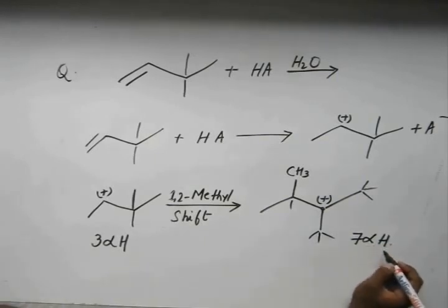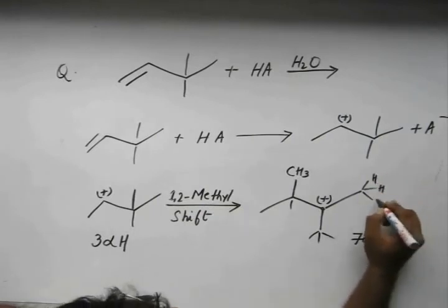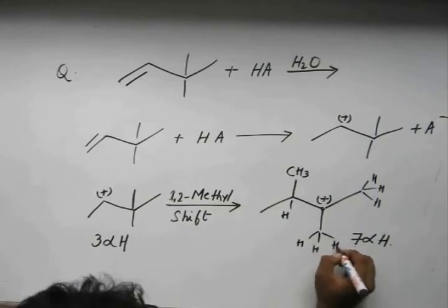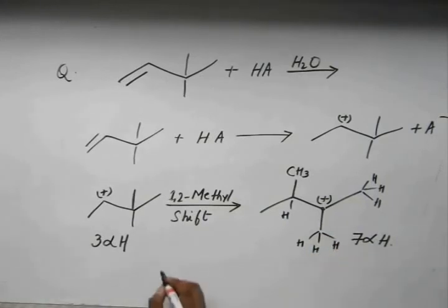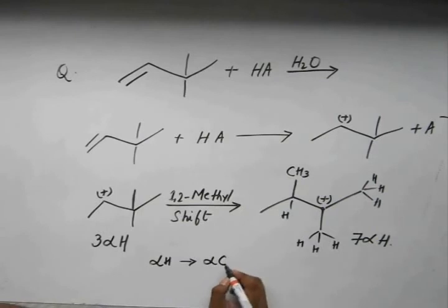So let's count: 1,2,3,4,5,6 and 7. Seven alpha hydrogens. I hope you know what are alpha hydrogens. Alpha hydrogens are the hydrogen atoms that are attached to alpha carbons.